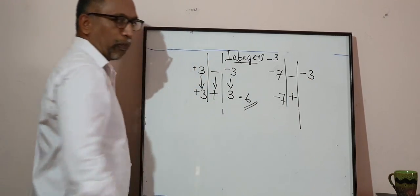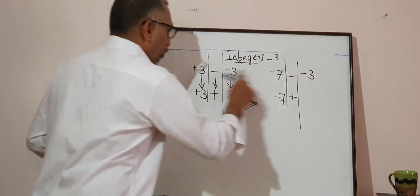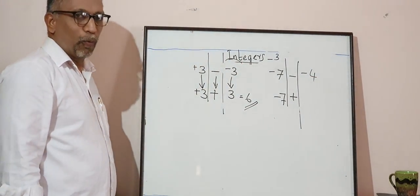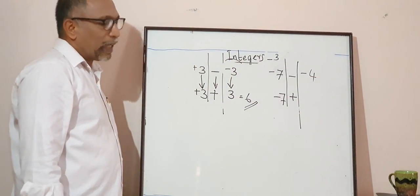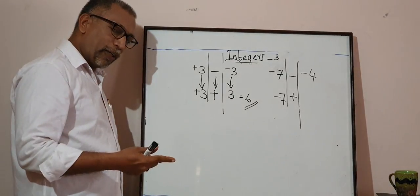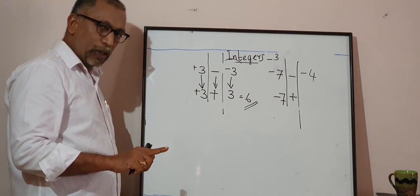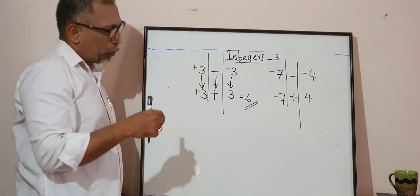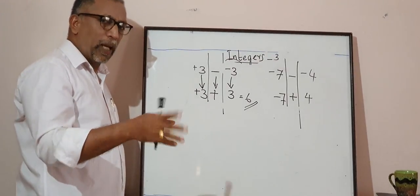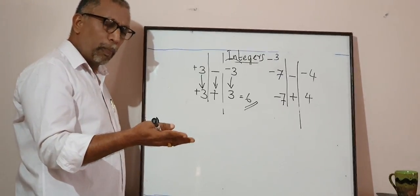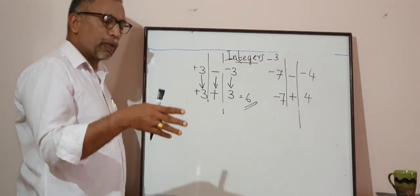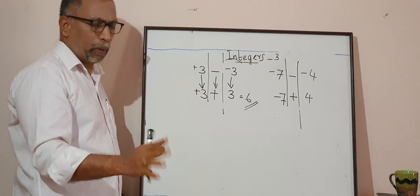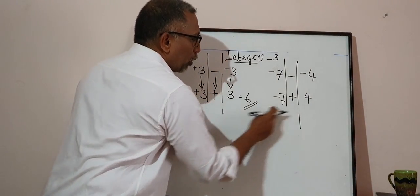Now the last number. Let's use negative 4 as our example for the third number. What is the additive inverse of negative 4? The additive inverse of negative 4 is positive 4. To make it easy: if it is negative 4, make it positive 4; if it is positive 4, make it negative 4. That is the opposite of the number. So this becomes an addition question: negative 7 plus 4.